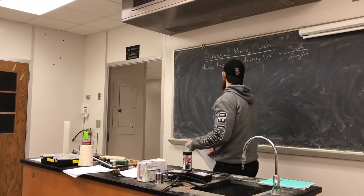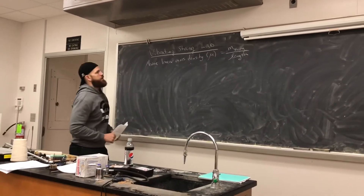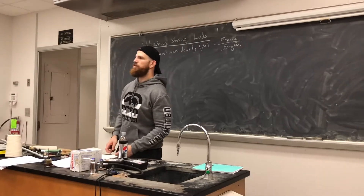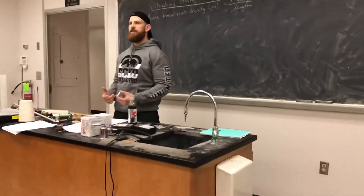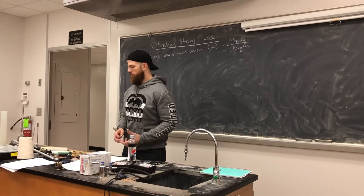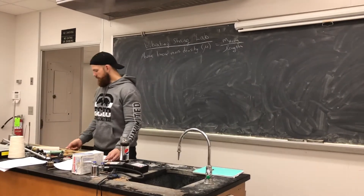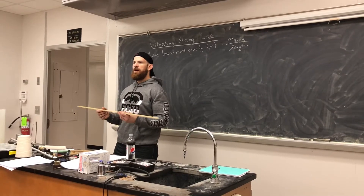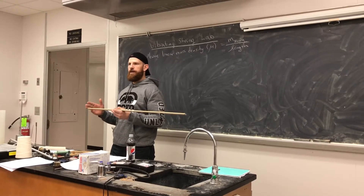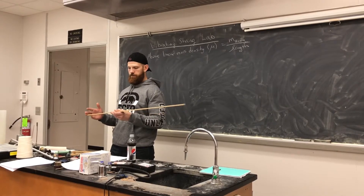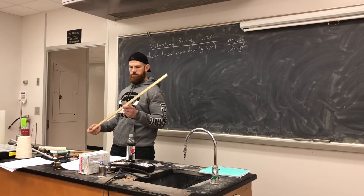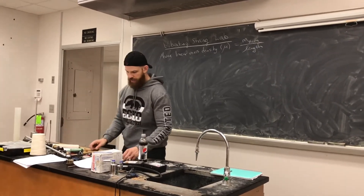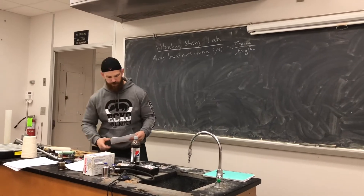The first step is to calculate the linear mass density of the object. Linear mass density is analogous to regular density. When you calculated density in Archimedes' principle, that was mass per unit volume. But linear mass density asks: what is the mass per each unit length? How much mass is in a foot, or in a meter? We use that to calculate the wave velocity.